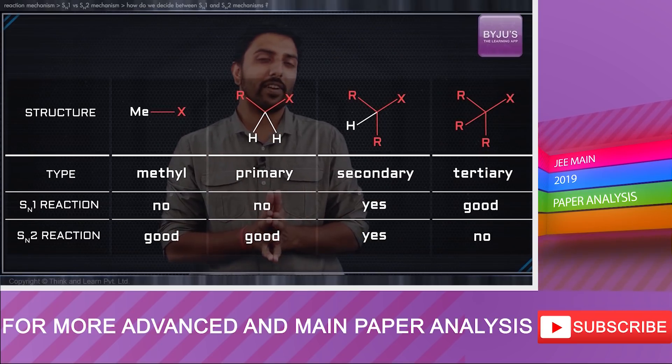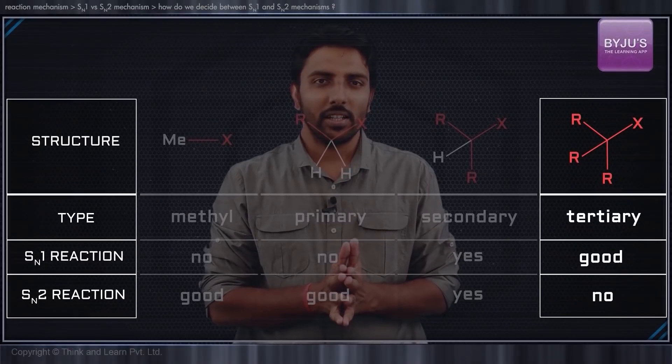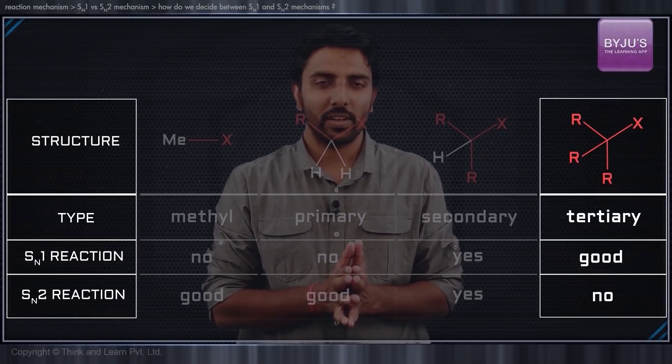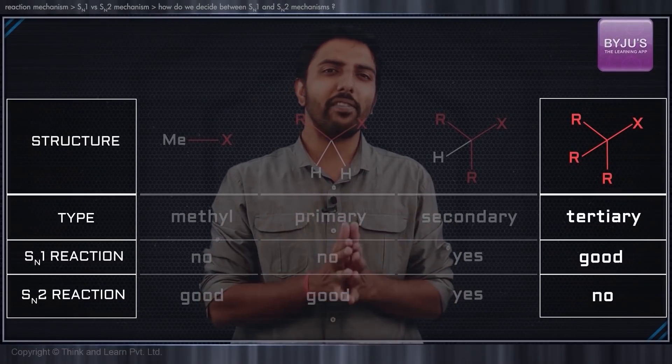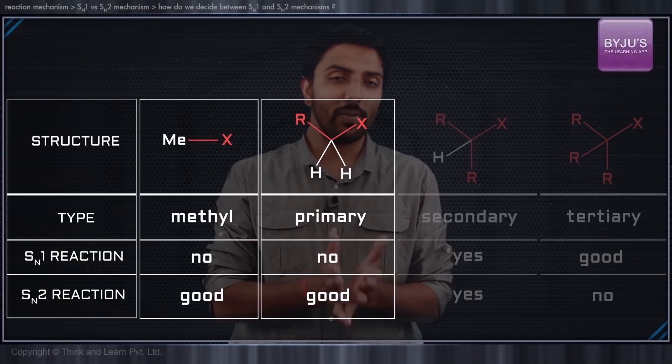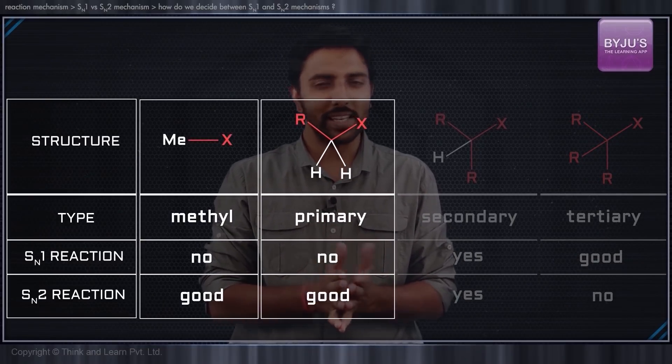Whenever we have a tertiary substrate, the mechanism is always going to be SN1. And whenever we have a primary substrate or a methyl substrate, we always choose the SN2. The earliest generalisation is that if a substrate can achieve a reasonably stable carbocation, it always chooses to go via that mechanism.